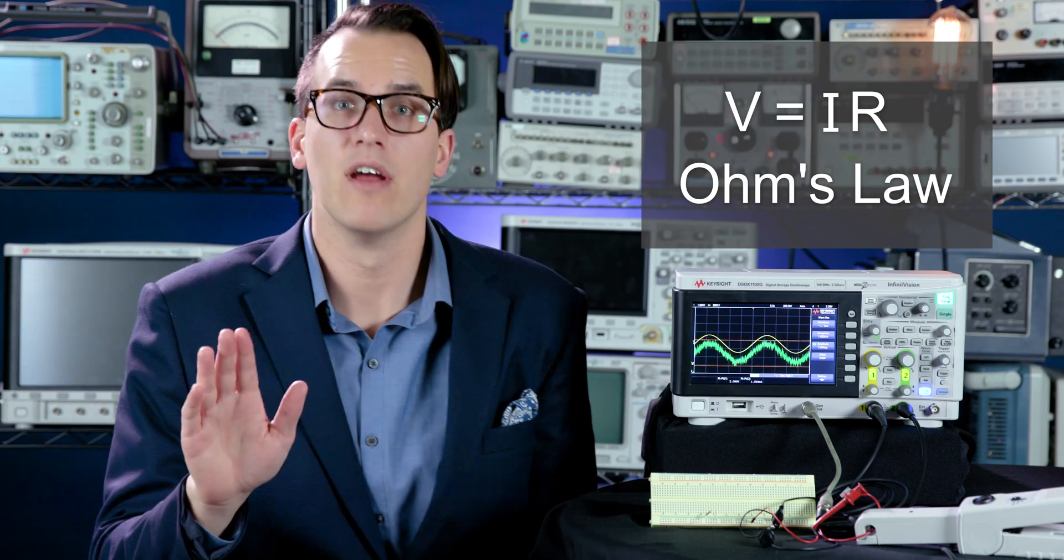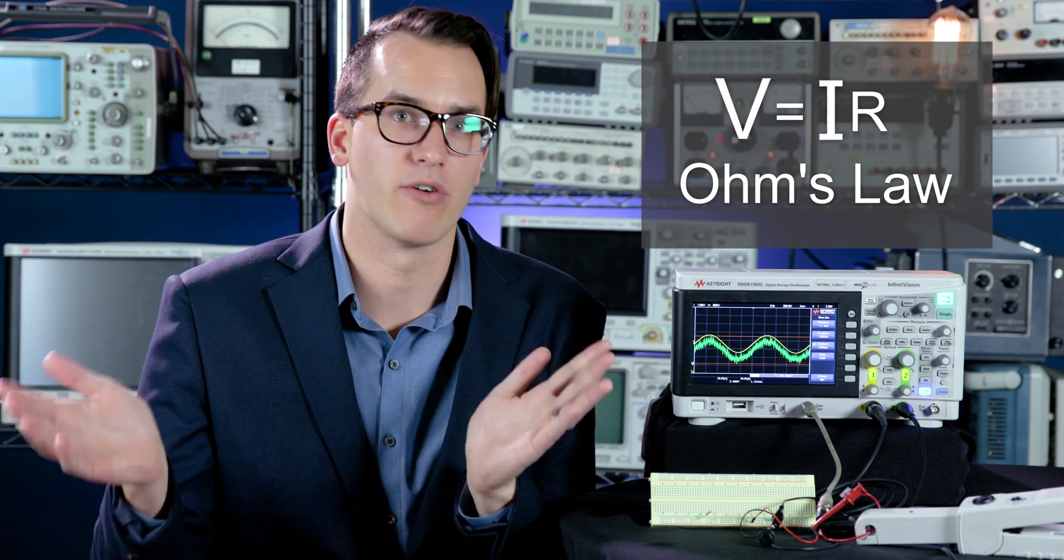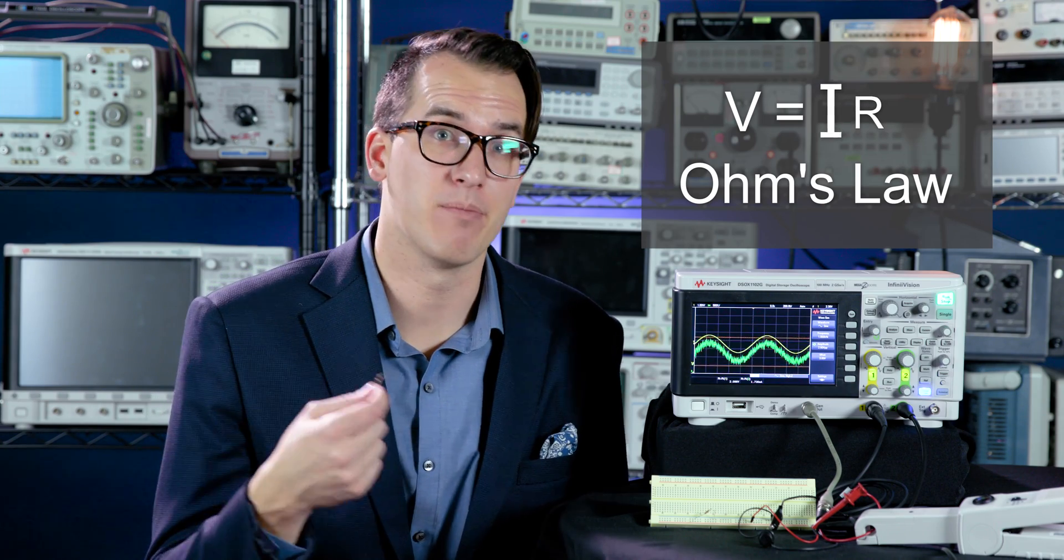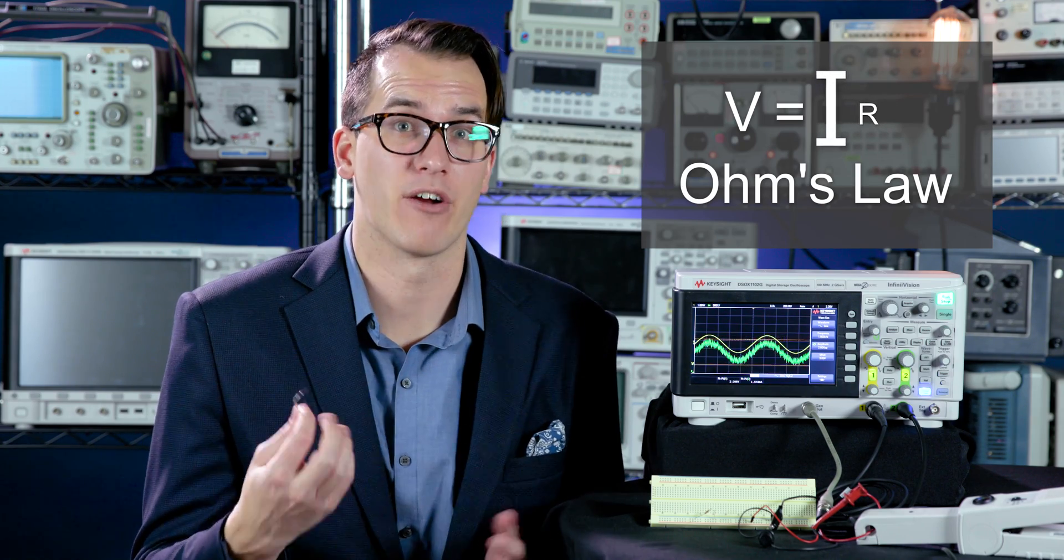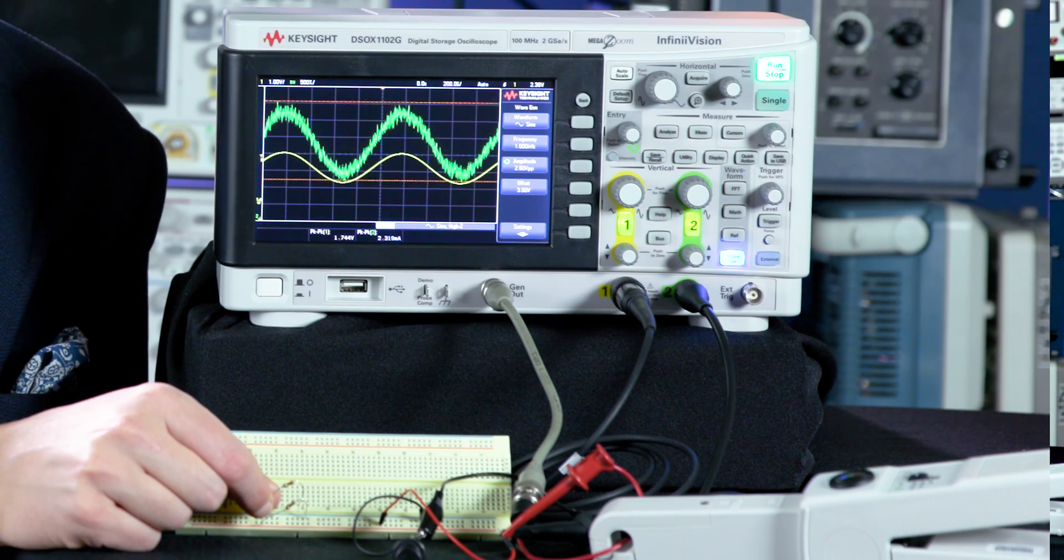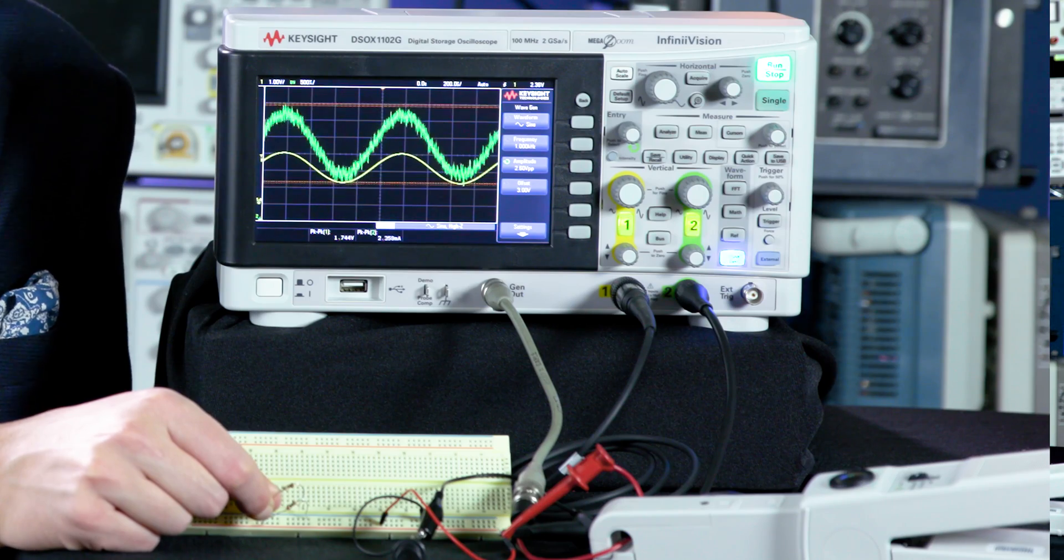Resistance is constant, so if voltage increases, current has to increase according to Ohm's law. And if I decrease the resistance by adding another resistor in parallel, we should see an increase in current because we have a constant voltage. And sure enough, our current has increased proportionally to the decrease in resistance.